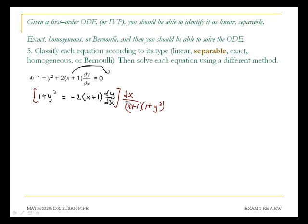Okay, so I'm multiplying everything by dx over x plus 1, 1 plus y squared. That'll cancel out the 1 plus y squared on the left side and it'll leave me with dx over x plus 1. On the right side of the equation, I've got this negative 2. The x plus 1 cancels, the dx cancels, and I have dy over 1 plus y squared.